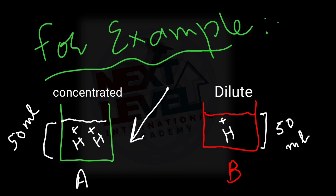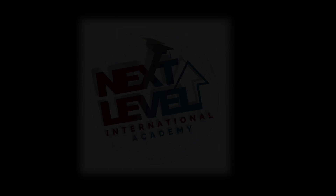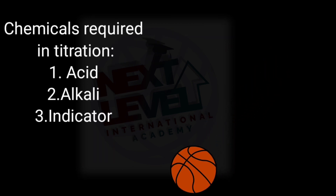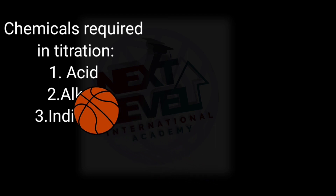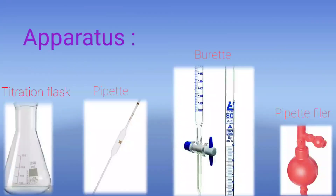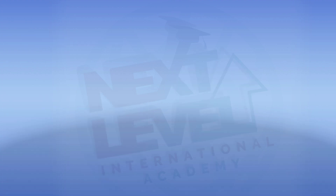The concentration of A is more compared to concentration of B. The chemicals we need in titration are acid, alkali, and indicator. The apparatus needed to perform the titration experiment are four different items shown here.